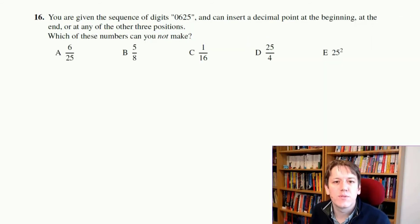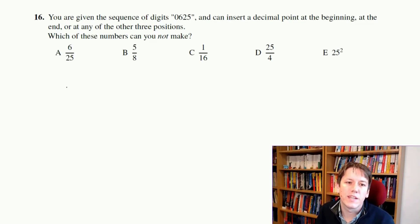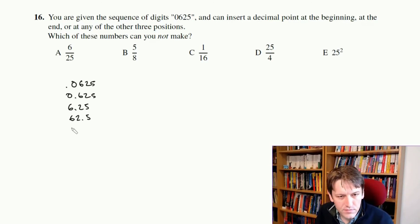Question 16, you're given the sequence of digits 0, 6, 2, 5, and you're allowed to put a decimal point either at the beginning, the end, or in any other position, so we can have 0.0625, we can have 0.625, we could have 6.25, we could have 62.5, or we could have 625.